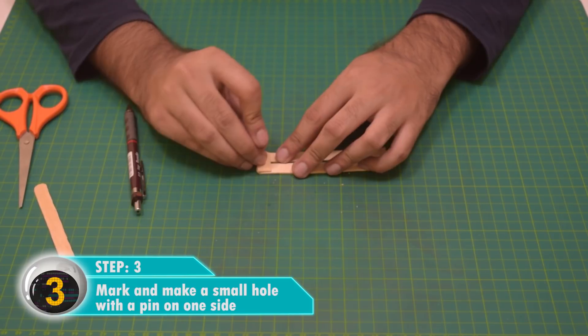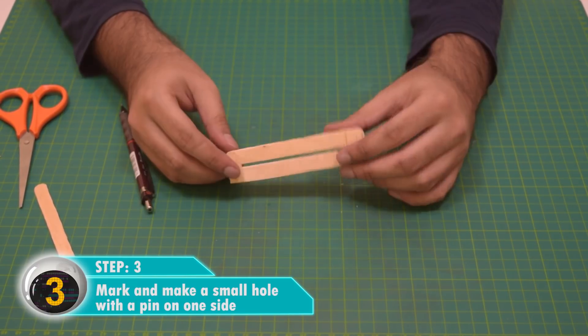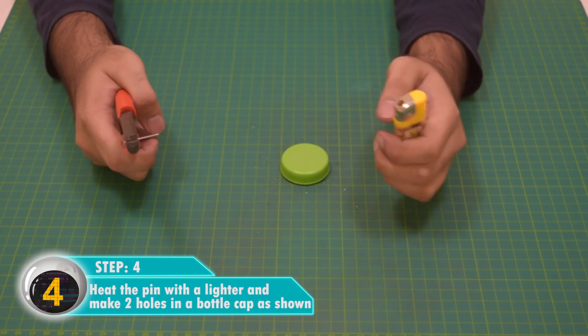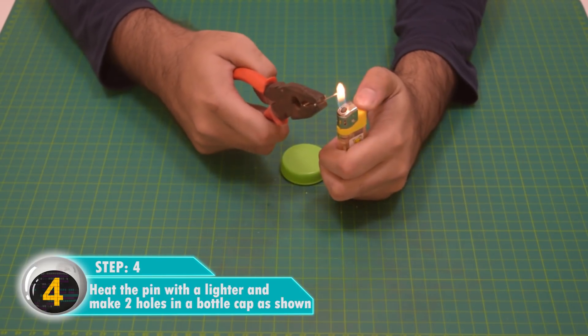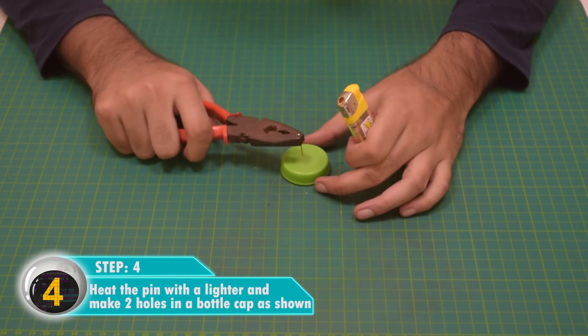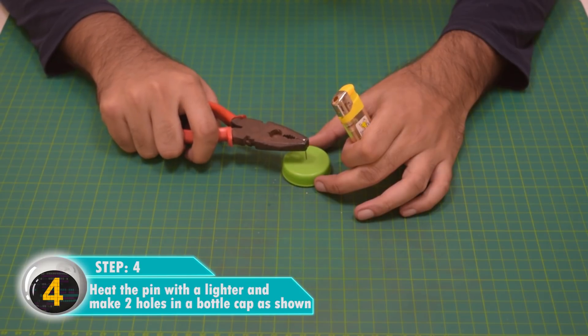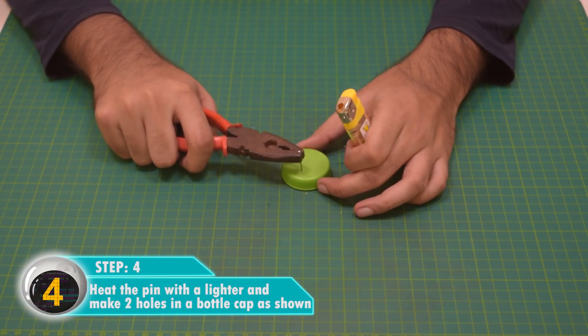Now we'll heat up a pin and make a hole in the cap, so we'll use a lighter. Always be careful and safe when using sharp objects and fire, both of which you're doing now, right? Yeah, so be very careful.